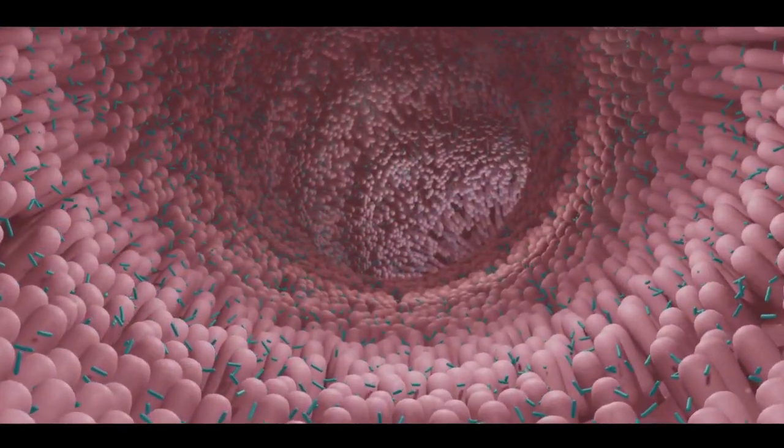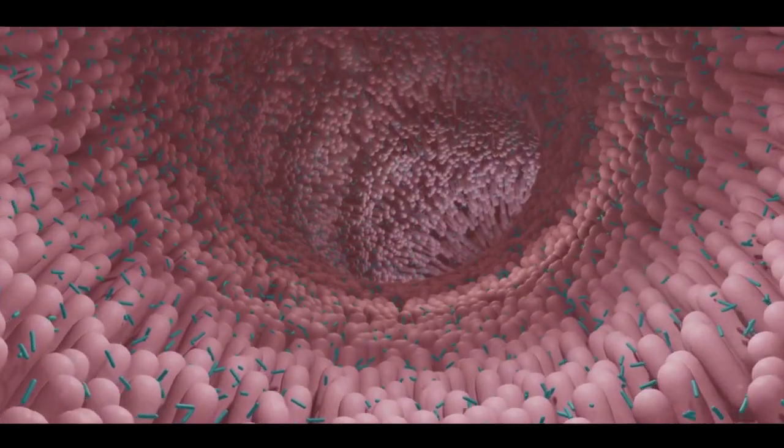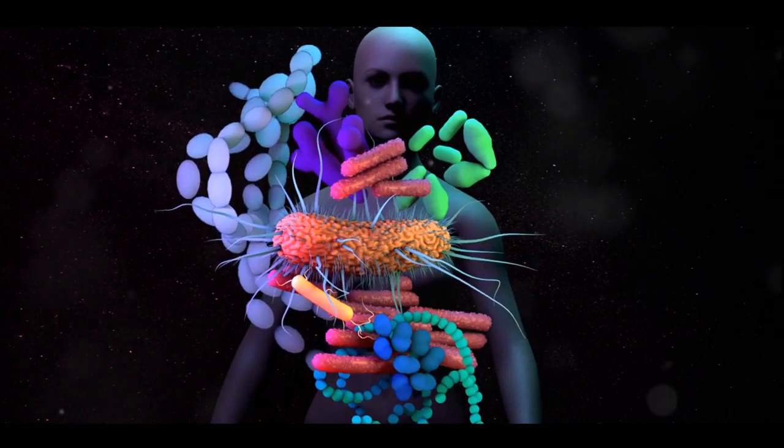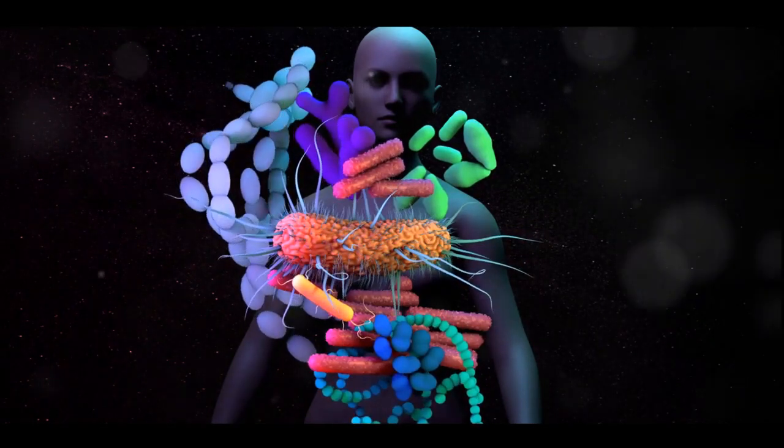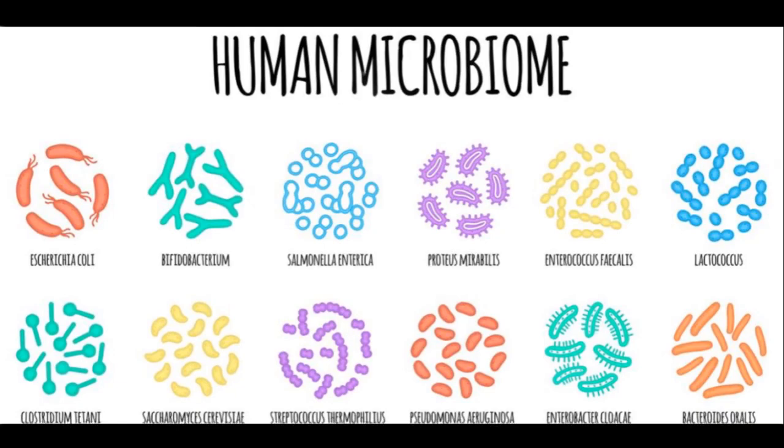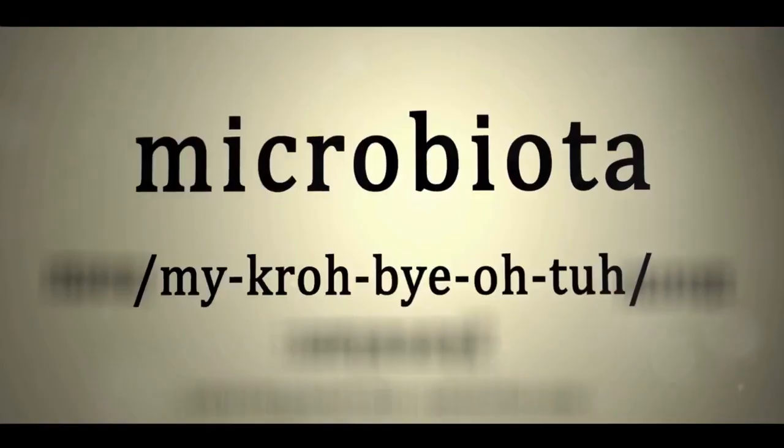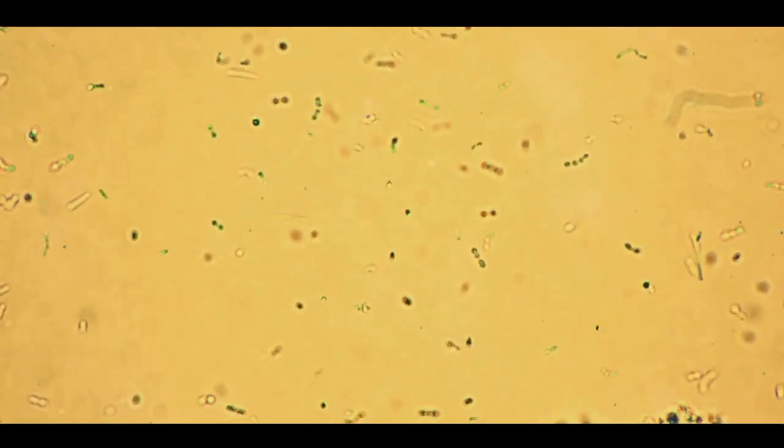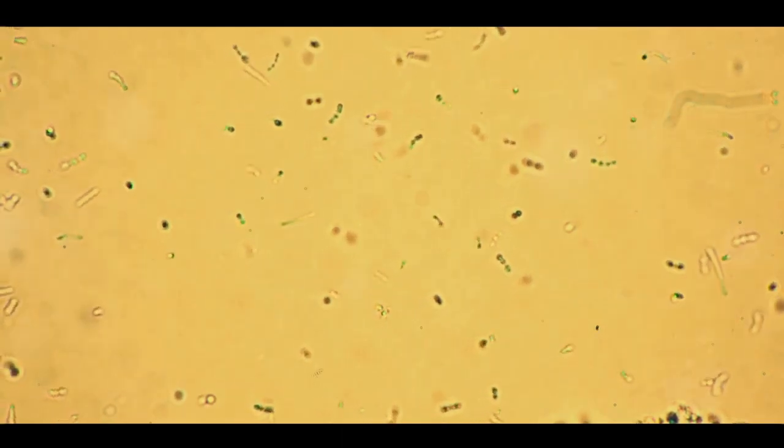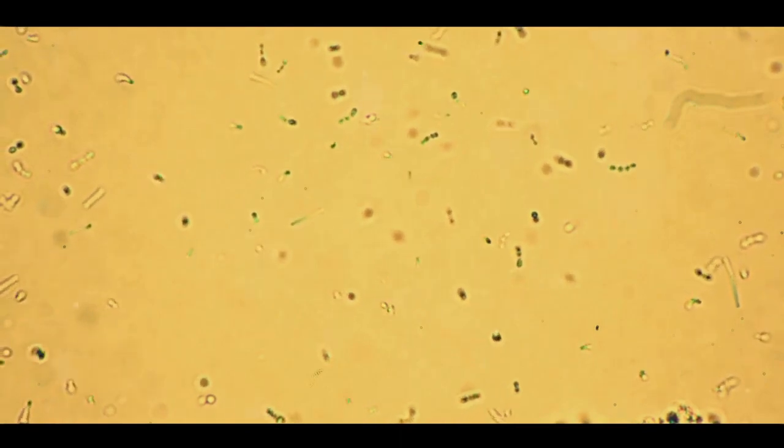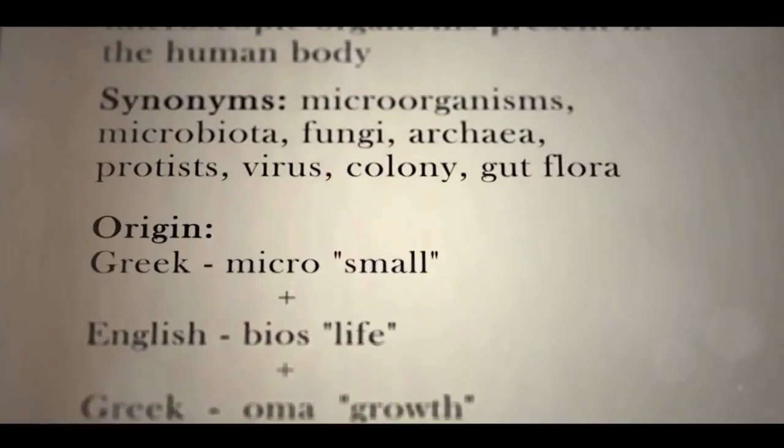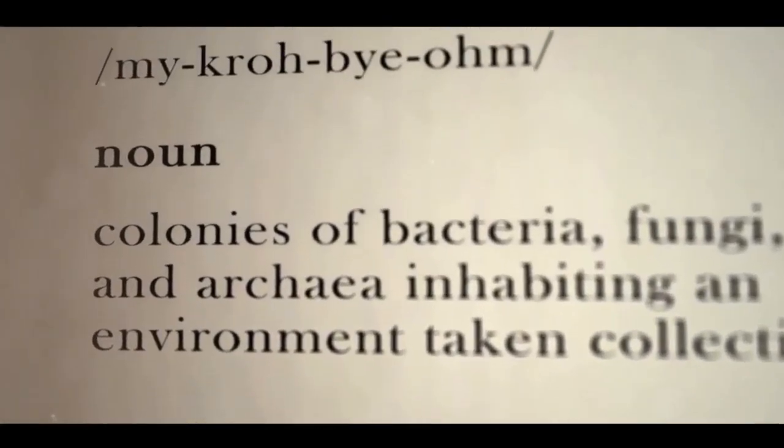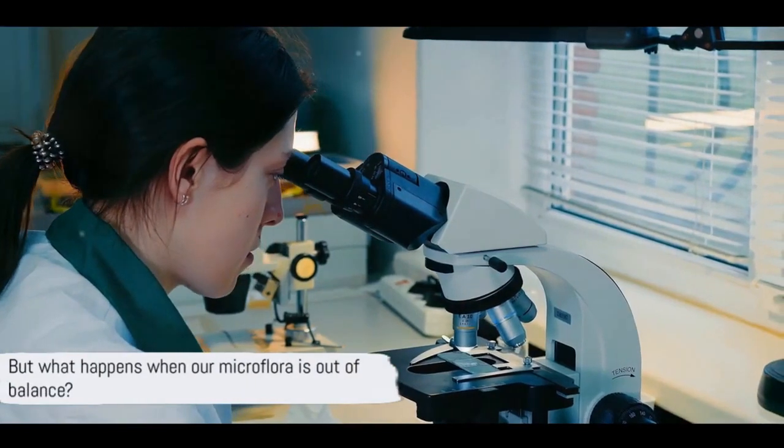Even our environment, from the air we breathe to the people we live with, can shape our microbial communities. Our genetic makeup also plays a role, as certain genetic factors can influence how our bodies interact with these microorganisms. Some people might have a genetic predisposition that allows certain bacteria to thrive, while others may not. In conclusion, our microflora is a complex and diverse community, constantly interacting and evolving with us. It's a reflection of our lifestyles, our choices, and even our ancestry. Our microflora, it seems, is as unique as we are.